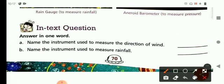Now children, let's try to give the answer in one word. Name the instrument used to measure the direction of wind. What is it called? This is wind vane. Next one is, name the instrument used to measure the direction of wind. This is rainfall and this is rain gauge.